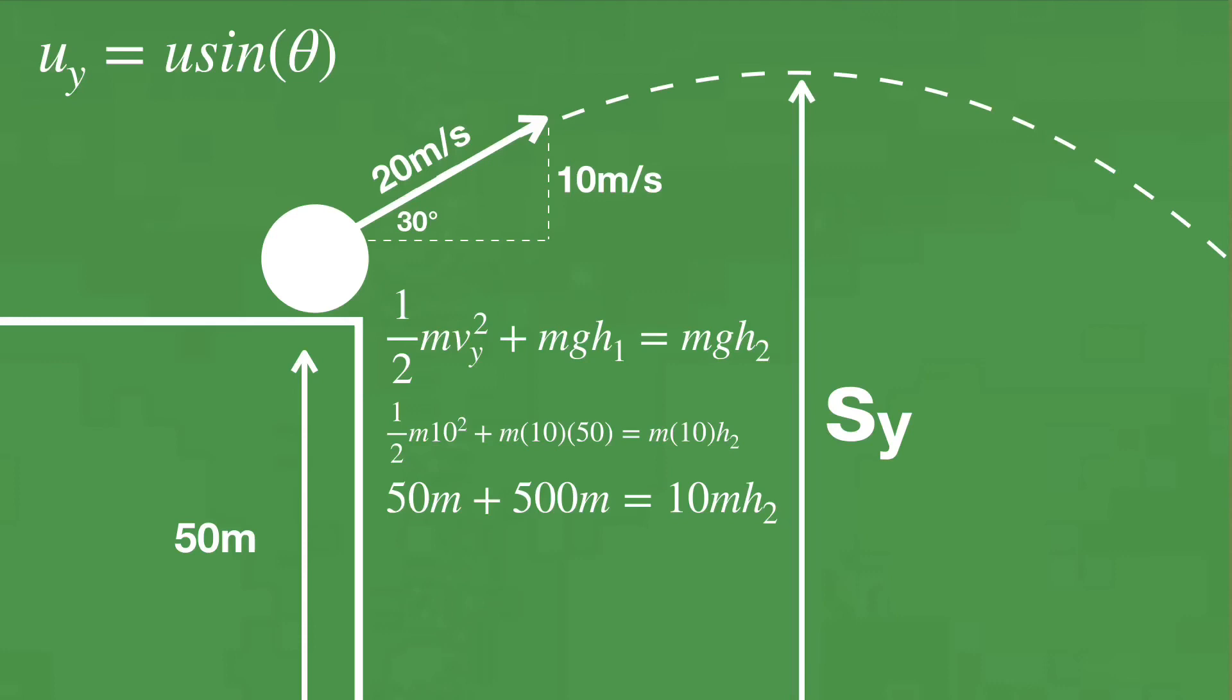Then we see that mass cancels out, and we're left with 550 equals 10h₂. Our max height is 55 meters.